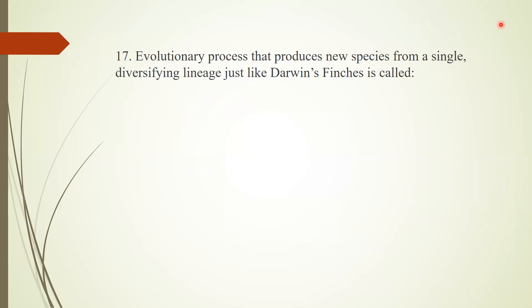Question 16: Anything that slows or stops a population from growing is called a limiting factor. Question 17: The evolutionary process that produces new species from a single diversifying lineage, like Darwin's finches, is called adaptive variation.